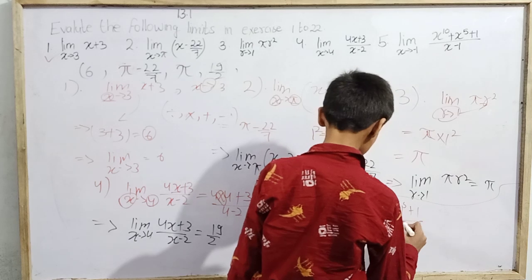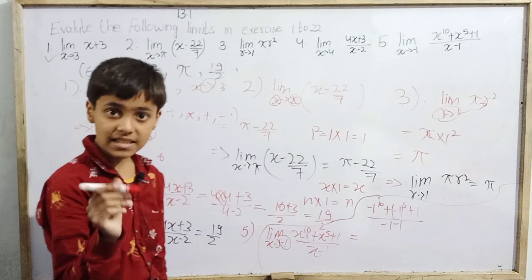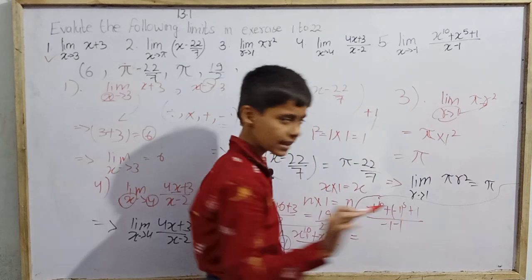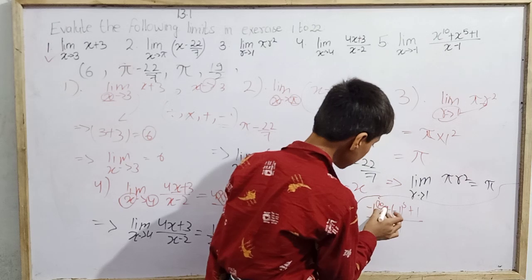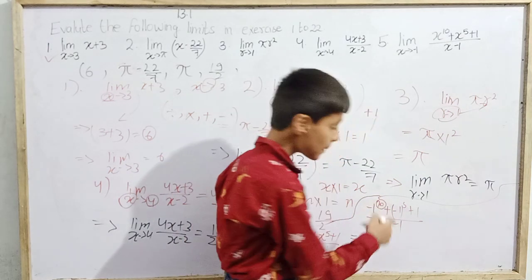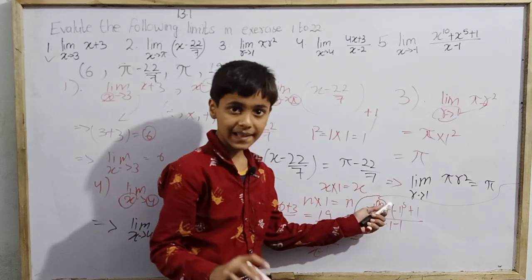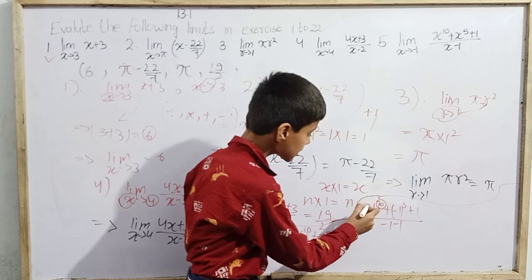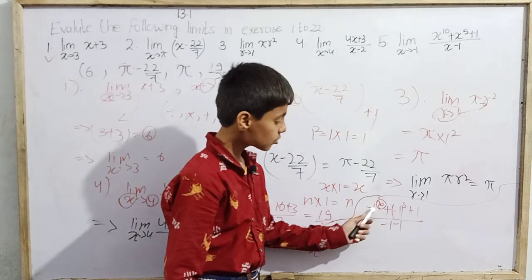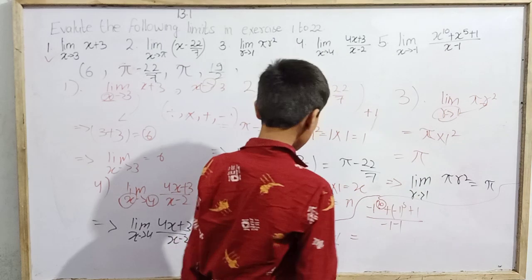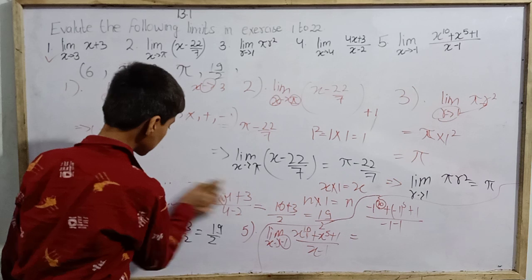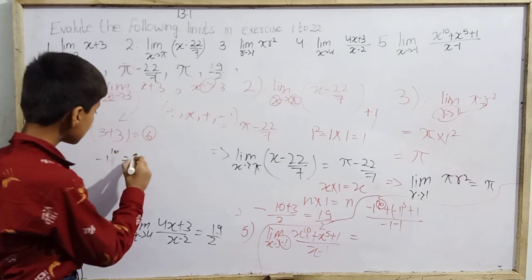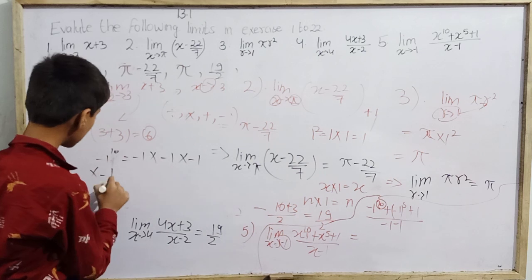Now, (−1)¹⁰ — is it positive or negative? Whenever we have a negative number raised to a power, if the power is an even number, the final answer is positive; if the power is odd, the answer is negative. So (−1)¹⁰: since 10 is even, the answer is positive. Let me show why: (−1)¹⁰ = (−1) × (−1) × (−1) × (−1) × (−1) × (−1) × (−1) × (−1) × (−1) × (−1).